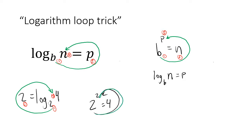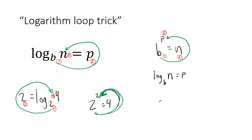So — the loop trick! Sometimes it's nice to do a sound effect when you do the loop trick. And just to clarify: log base 2 of 4 equals 2. That's the correct form — I had written it wrong before. So log base 2 of 4 equals 2.